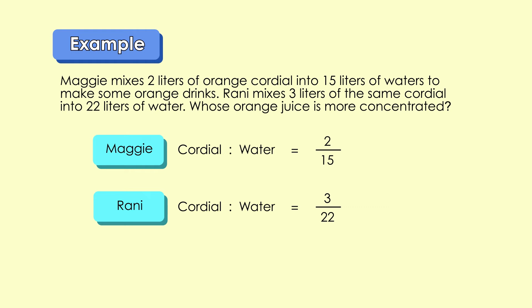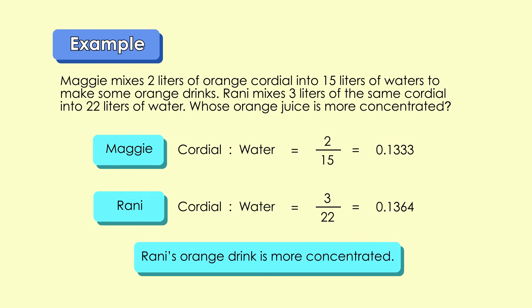Let's use a calculator to do the conversion. Press 2 over 15 on your calculator — you will get 0.1333. Similarly, 3 over 22 equals 0.1364. Comparing between 0.1333 and 0.1364, which number has the higher value? Which orange juice is more concentrated? 0.1364 has a higher value than 0.1333. Hence, we can say that Rani's orange drink is more concentrated.